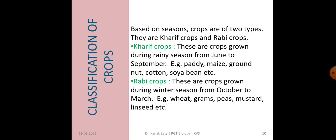Now next is about the classification of crops. Crops are classified into two types on the basis of seasons — Kharif crop and Rabi crop. Kharif crops are those crops which are grown during the rainy season; that is, sowing and harvesting is done between June and September. For example: paddy, maize, groundnut, cotton, soya bean — they are the Kharif crops.